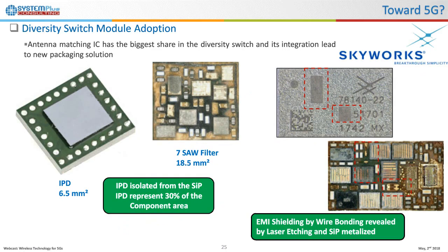To manage electromagnetic interferences, Broadcom chose to integrate several shielding solutions: the SiP is fully externally metalized and grounded with internal ground wire bonding to shield critical dies such as the IPD. Skyworks also shows improvements in packaging — as device counts increase, they integrate more to provide a small form factor solution. Like Broadcom, they integrate internal and external shielding using wire bonding and metal shield packaging, plus integrating the IPD outside the SiP in a face-to-face configuration completely isolated from the filters.